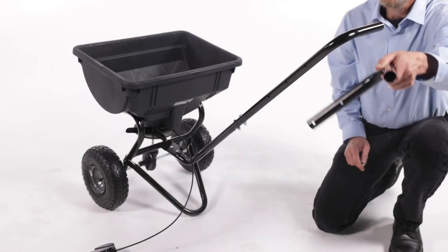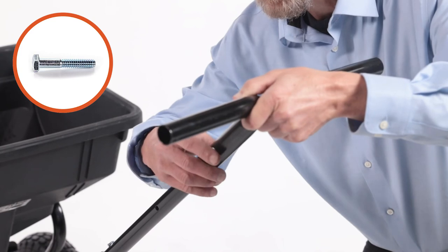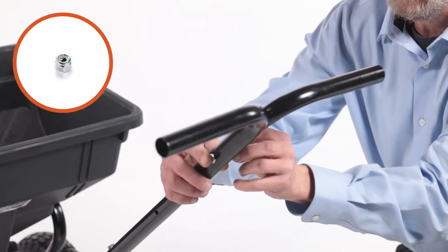Then, align the short handle tube, Part Y, and secure the top with one 1⁄4-inch by 1 1⁄2-inch bolt, Part C, and a 1⁄4-inch nylock nut, Part F.